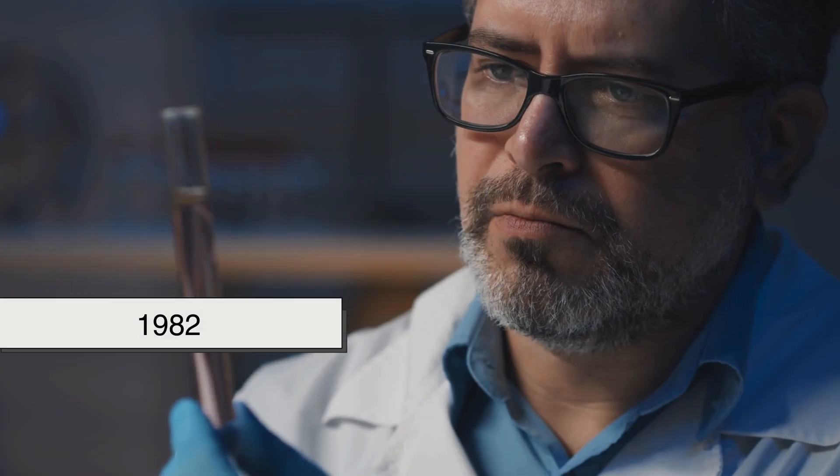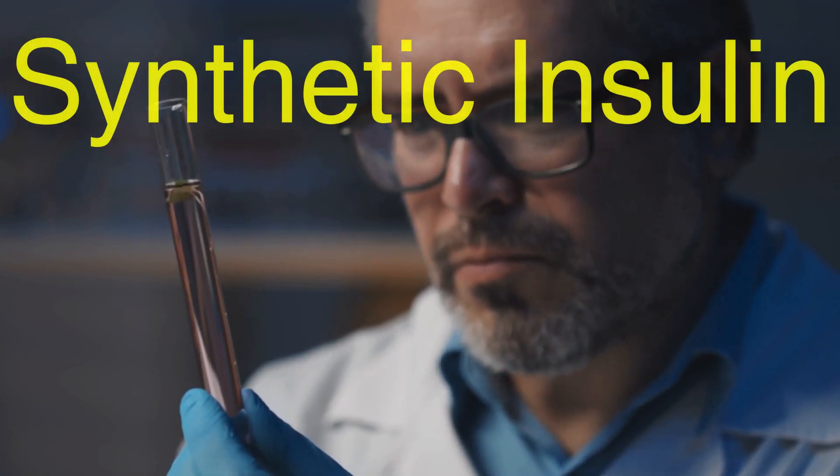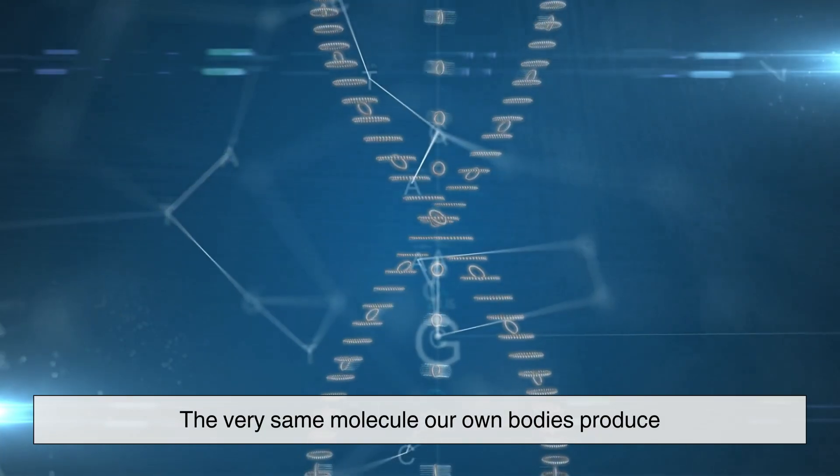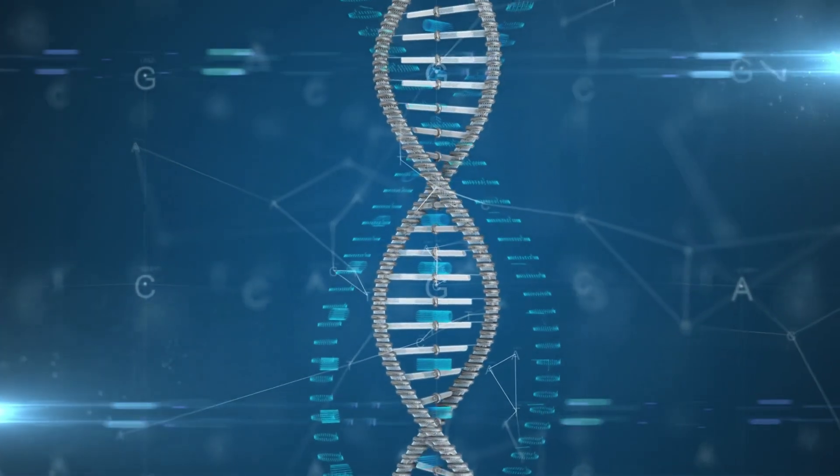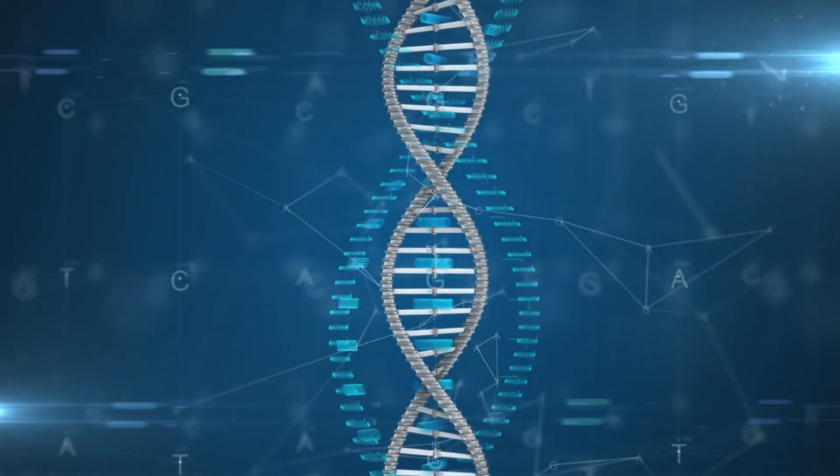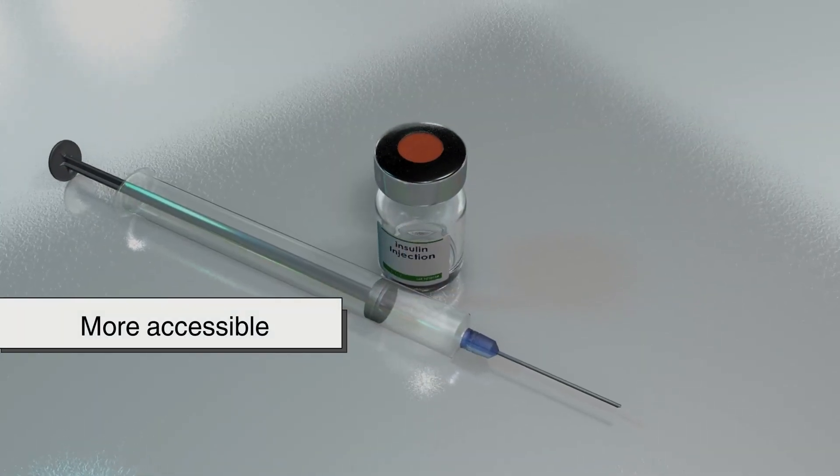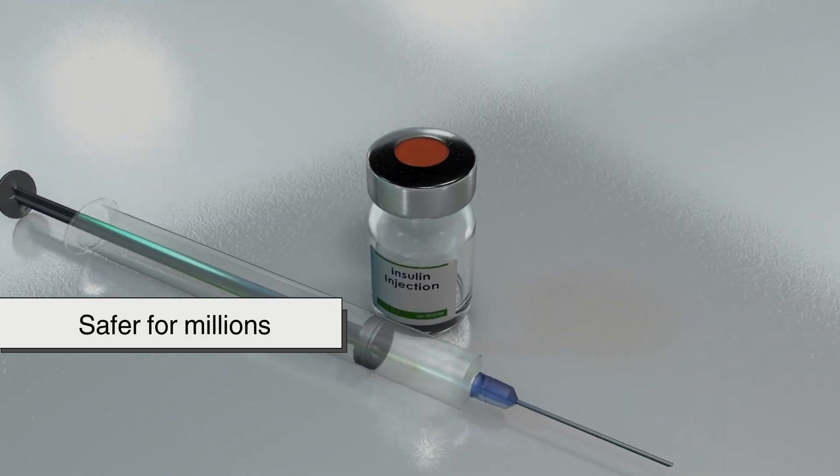Then, in 1982, everything changed. Scientists using the groundbreaking field of genetic engineering developed synthetic insulin, the very same molecule our own bodies produce, but created outside of the human body. This achievement revolutionized diabetes treatment, making insulin more accessible, consistent, and safer for millions.